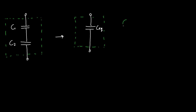Remember that capacitance is defined as the charge on one of the plates Q divided by the voltage across those plates. So V is across the box, with plus Q on top and minus Q on the bottom. What is V of our box in terms of the voltages of the individual capacitors? Because they're in series, it's just the sum of the individual voltages. Using Kirchhoff's voltage law, the total voltage is V1 plus V2.